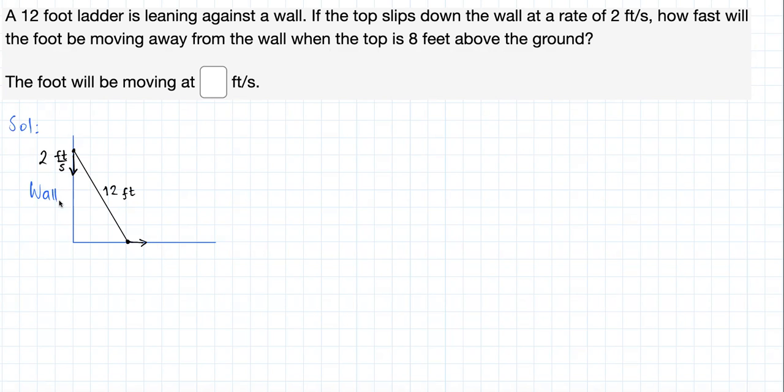If we let the vertical distance be represented by y and the horizontal distance be represented by x, what basically they are asking us to find is the derivative of x with respect to time when the top is 8 feet above the ground, when y is equal to 8 feet, right?